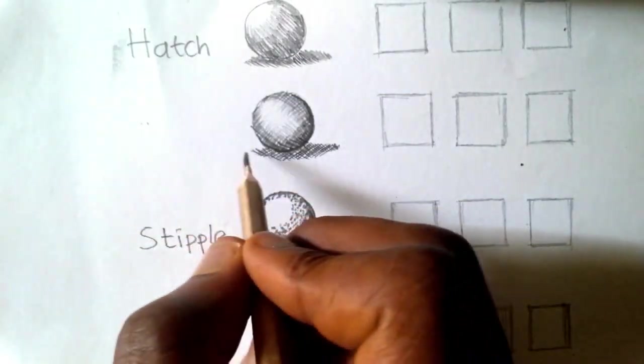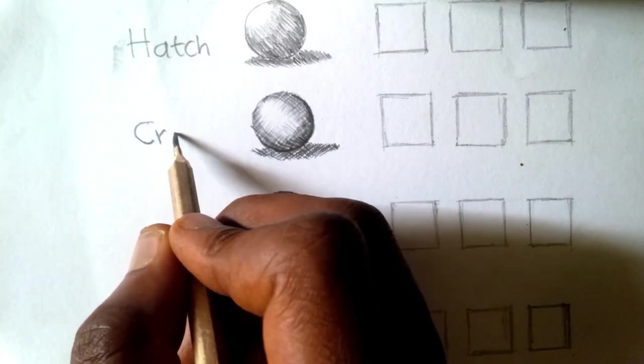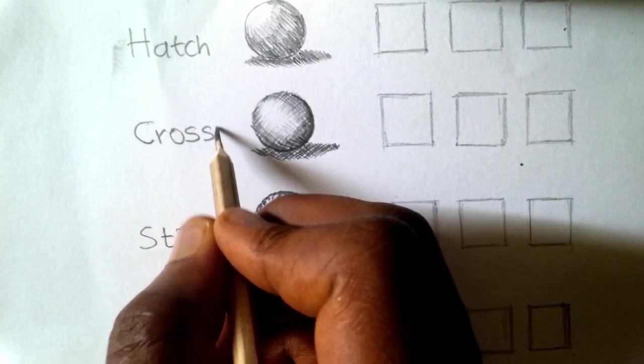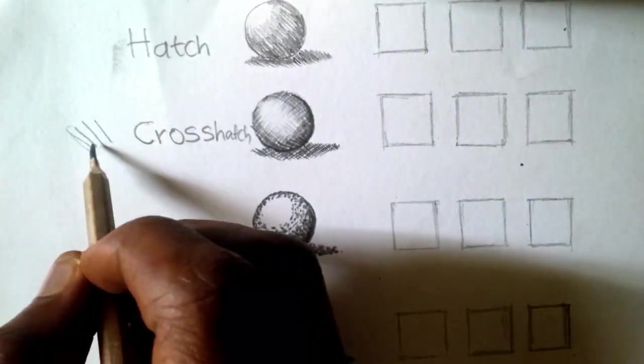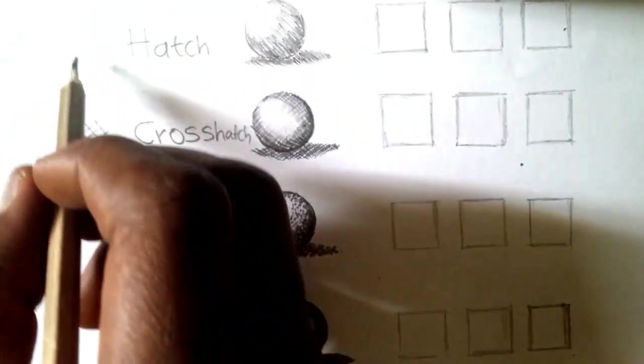So these are the different techniques. You have the hatching, you have the cross-hatching, you have the one down below with the stipple, dot on stipple, and the last smudge technique.